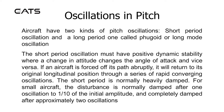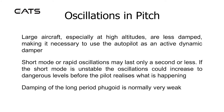The short period is normally heavily damped. For small aircraft, the disturbance is normally damped after one oscillation to one tenth of the initial amplitude, and completely damped after approximately two oscillations. Large aircraft, especially at high altitudes, are less damped, making it necessary to use the autopilot as an active dynamic damper. Short mode or rapid oscillations may last only a second or less.